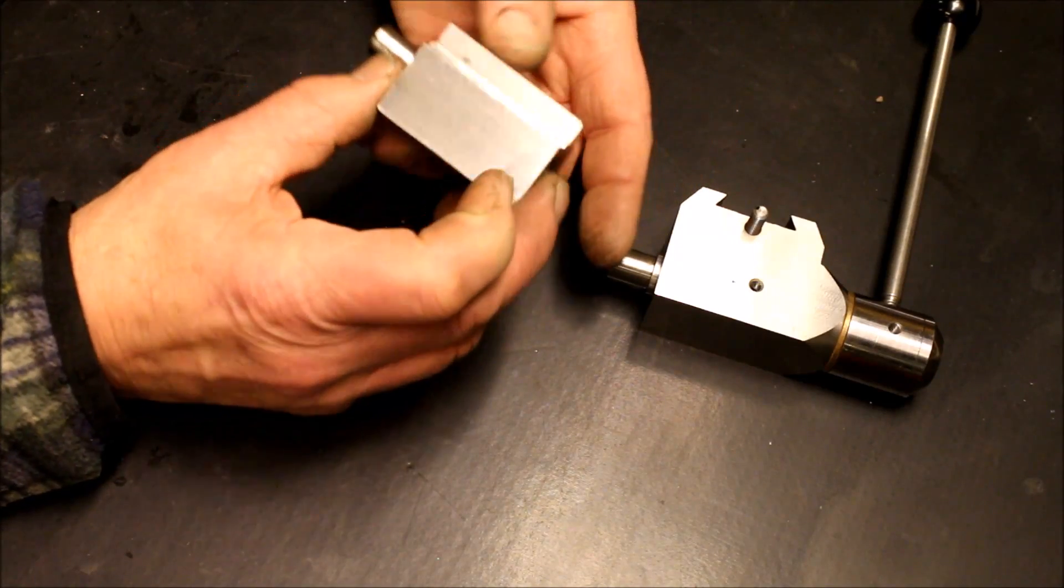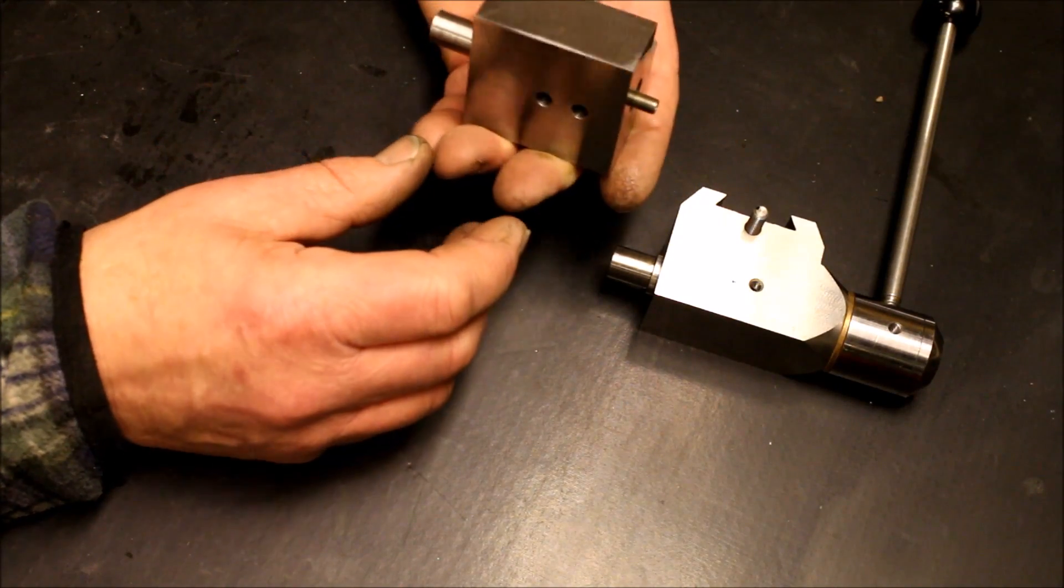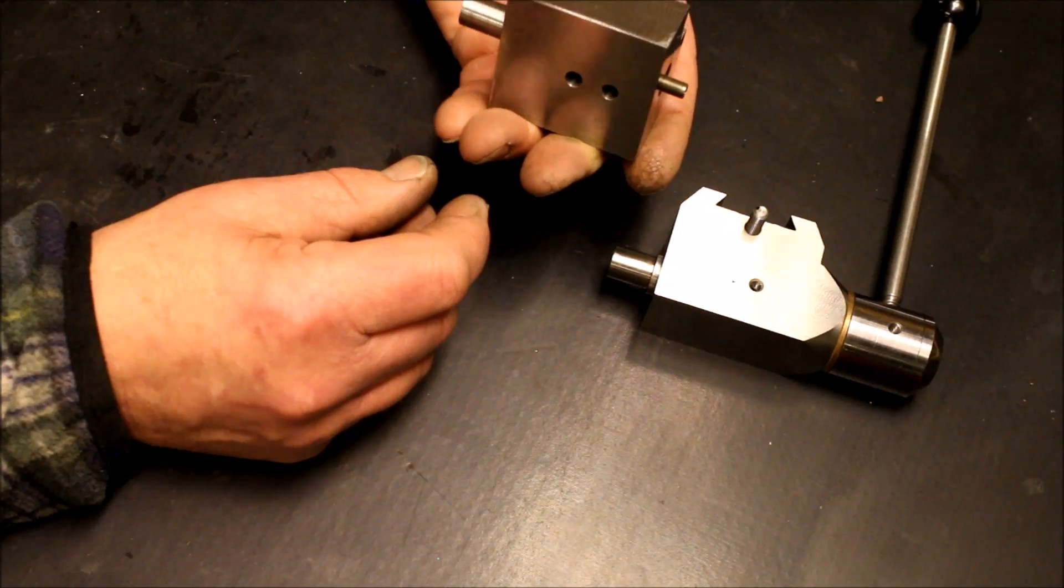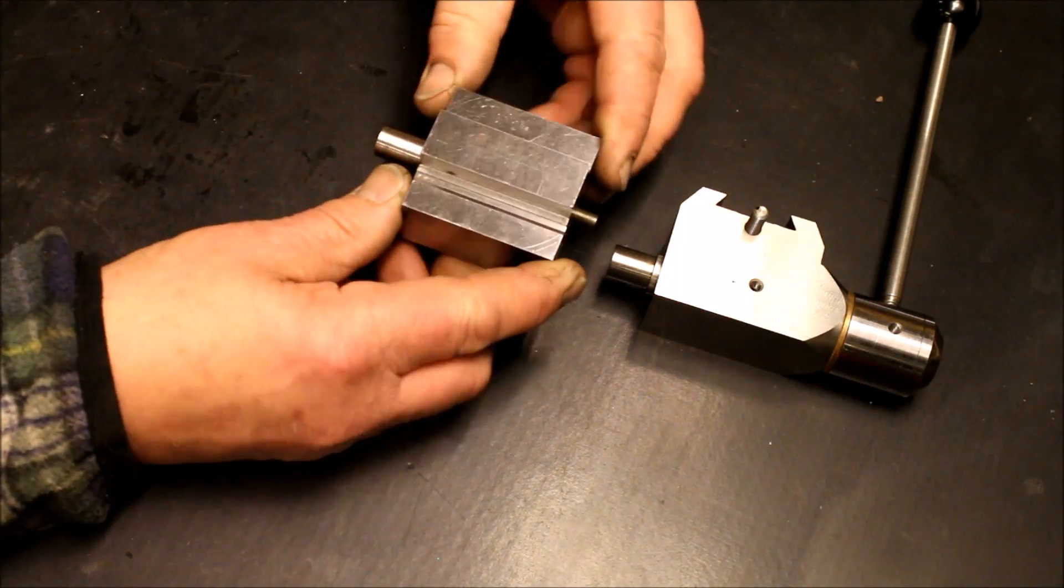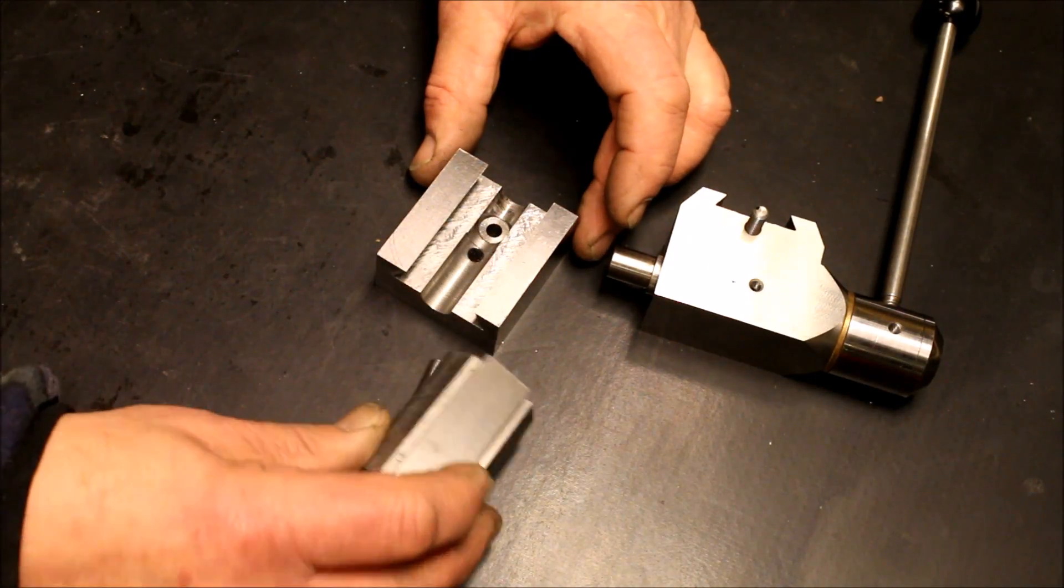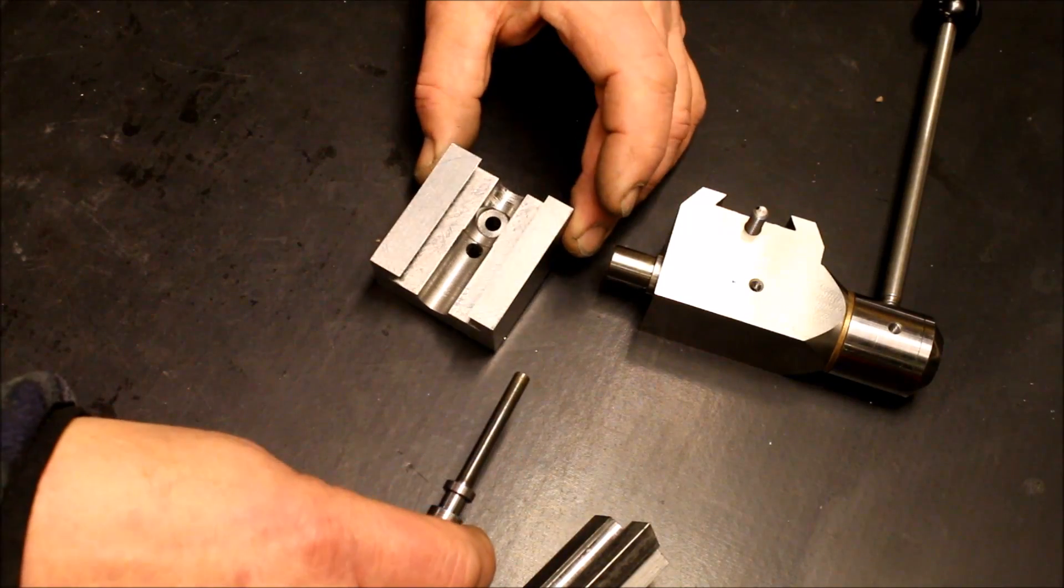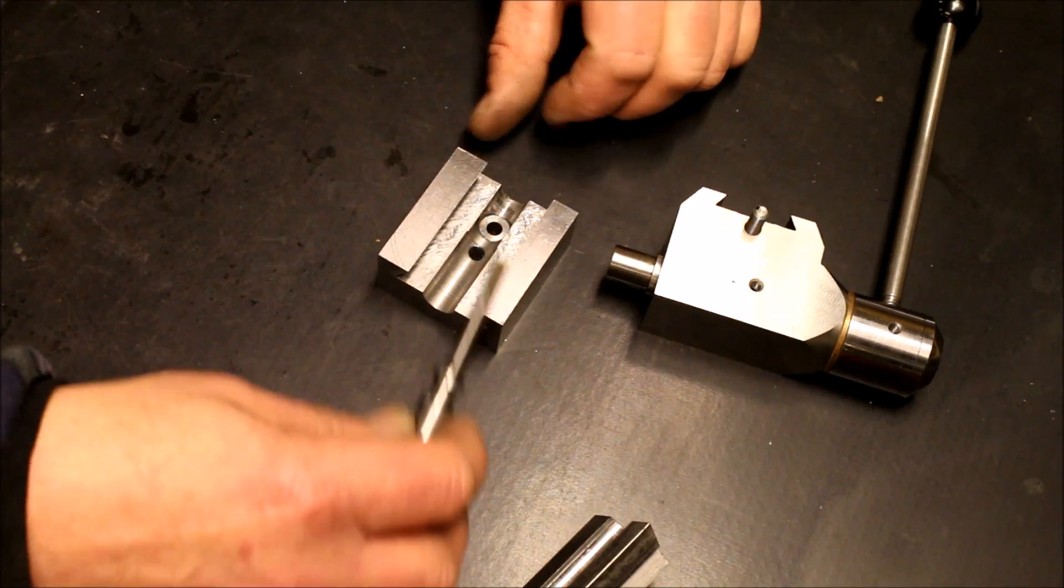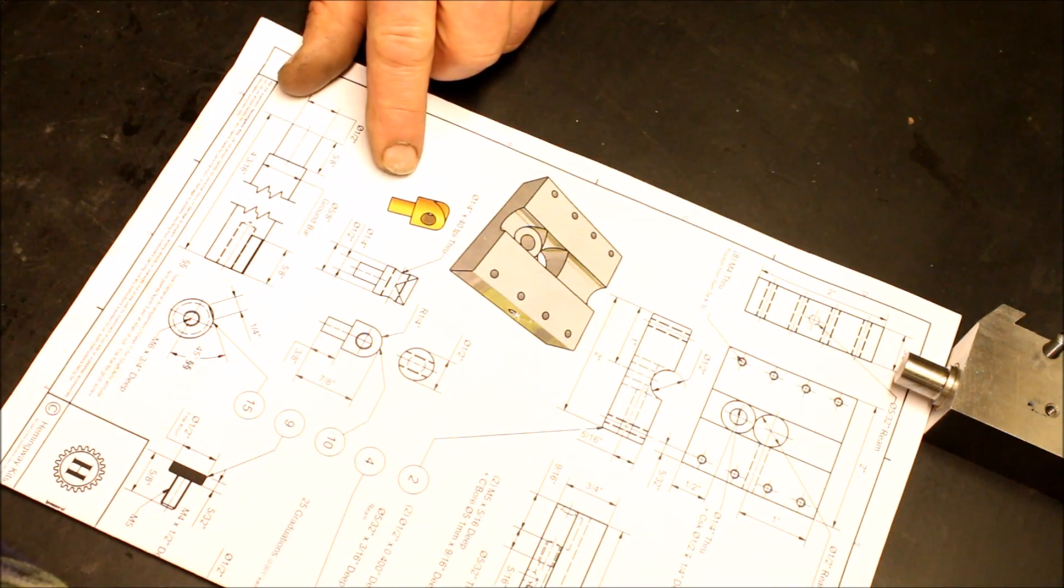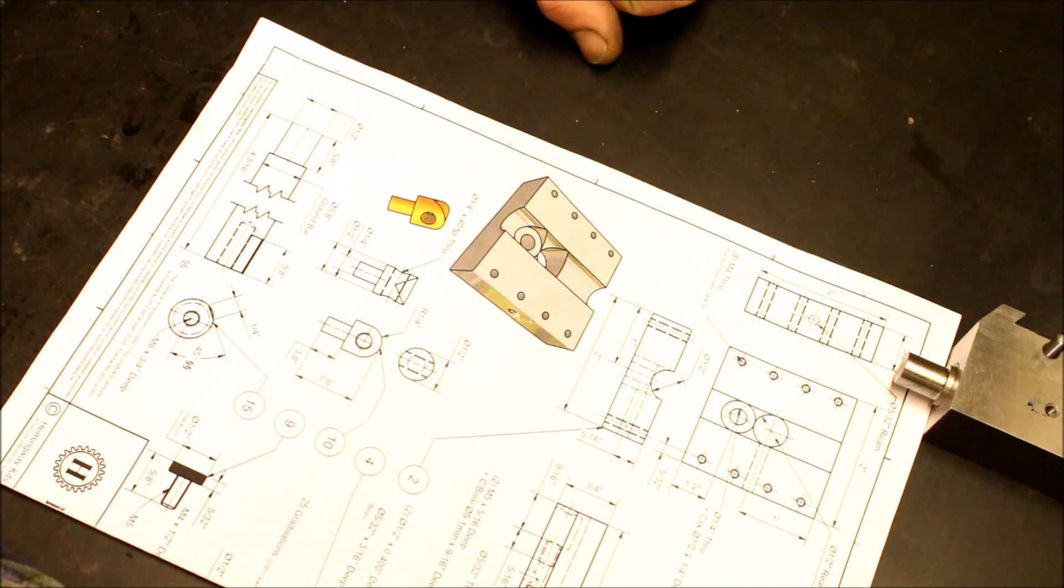I also need some stock nuts and some other small parts too. The nut I'm going to make is located in that hole, like this. It's a little brass nut. So, let's make it.